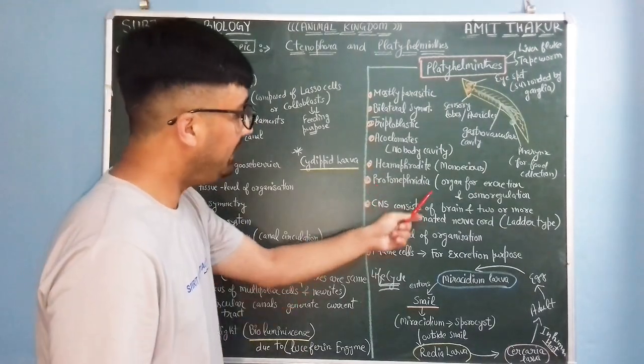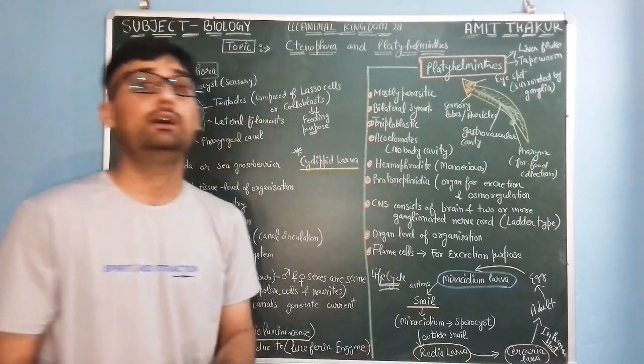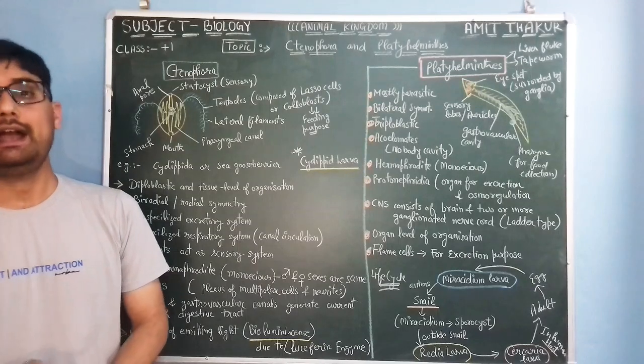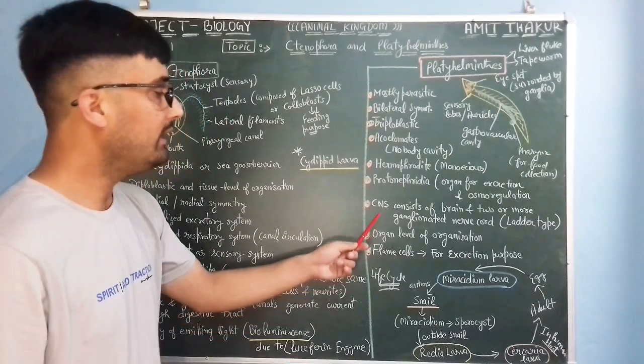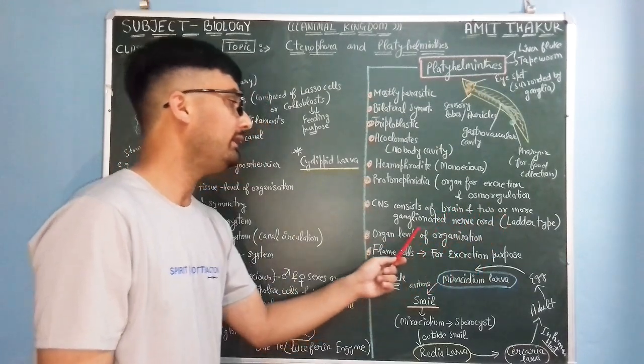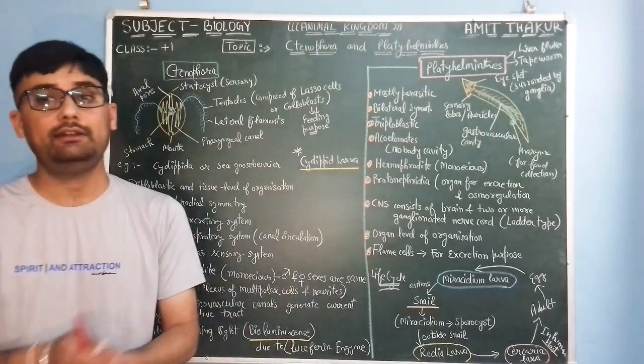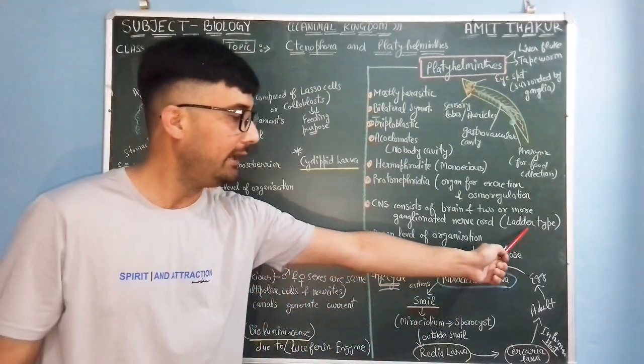They have protonephridia and flame cells for the same purpose, purpose of osmoregulation and excretion. Central nervous system consists of brain and two or more ganglionated nerve cord and nerve cord is ladder type, very important, ladder type nerve cord.